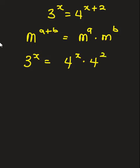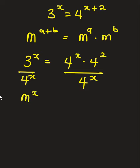Now, we're going to divide both sides by 4 raised to the power x. Whenever you have m raised to the power x over n raised to the power x, this is the same thing as m over n, all raised to the power x.